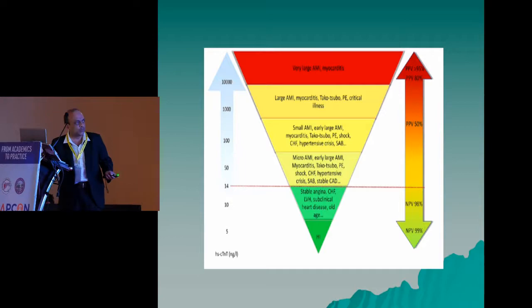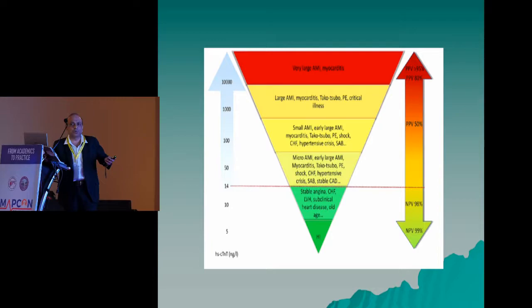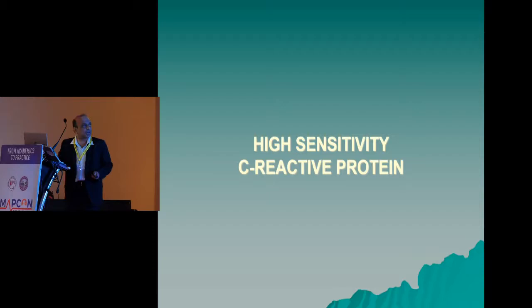In summary, as myocardial damage goes on increasing, the absolute value of troponins increases, with large myocardial infarction having values as high as 10,000 nanograms of troponins.